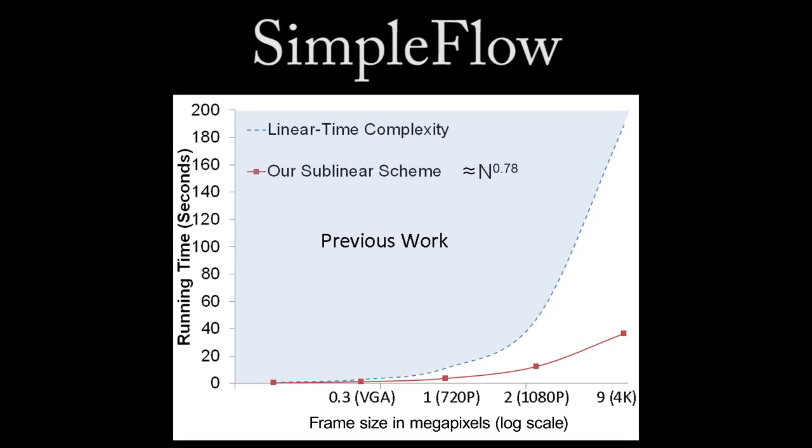Simple Flow has a unique characteristic: it is sublinear relative to the number of pixels in the frame. What this means is that as we feed in more pixels, we won't have large jumps in computational time, making it ideal for video editing.